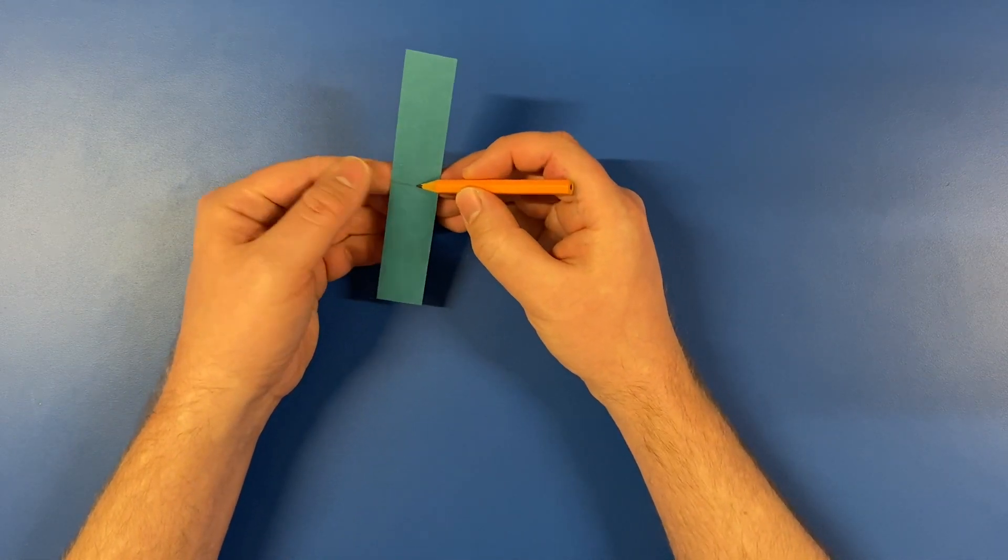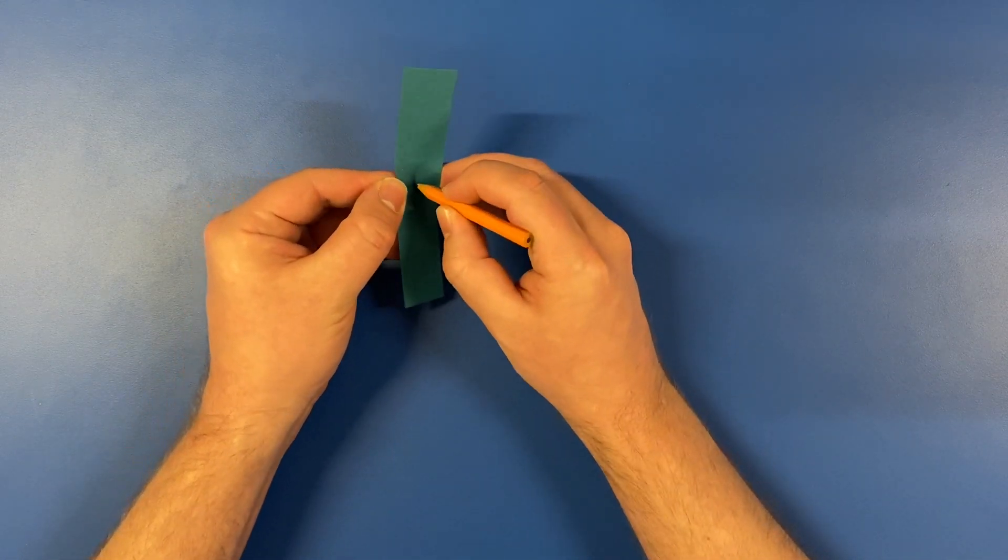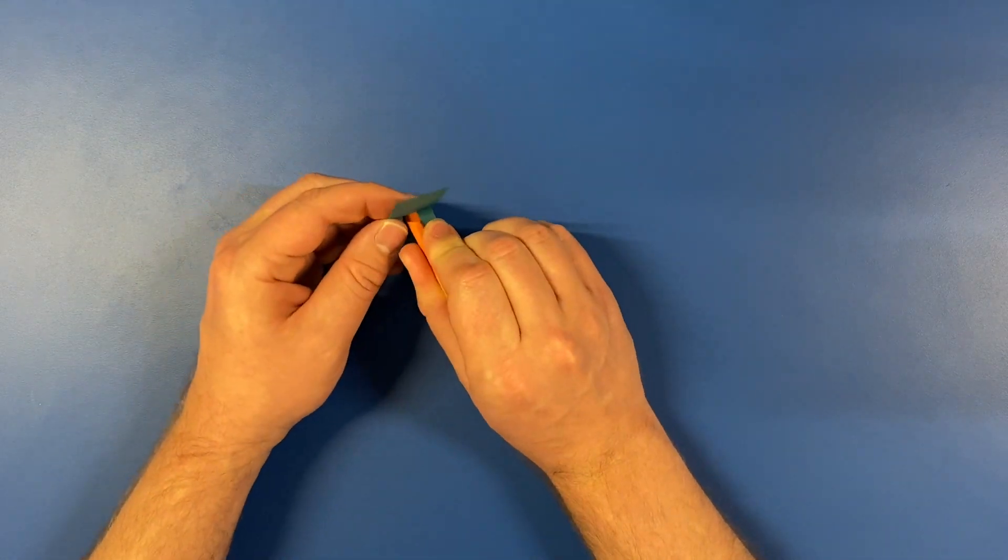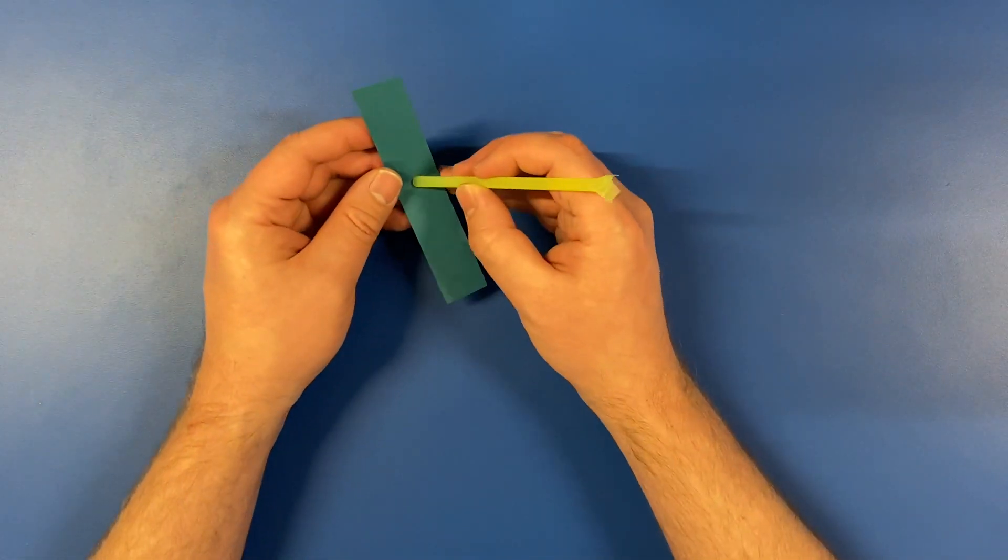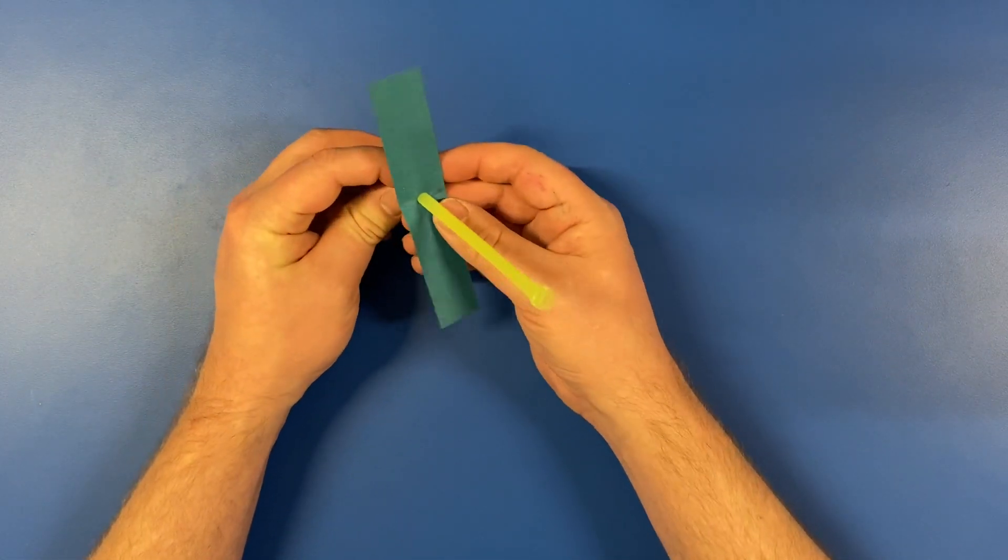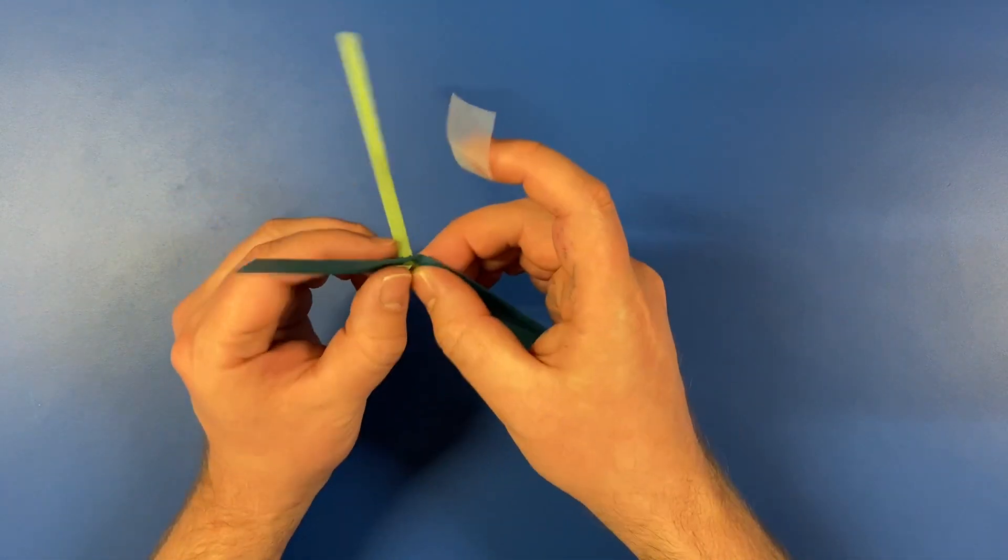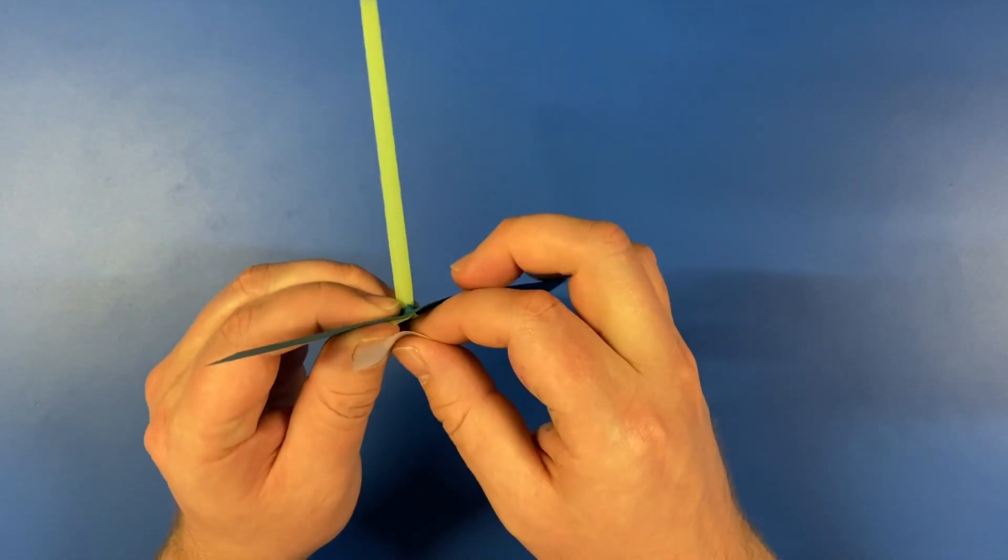I don't have a hole punch handy, so I will just use a sharpened pencil to poke my hole. Make sure it's the same size and width of your straw. Slide your straw through the hole. Open the flaps you cut earlier and tape them to the paper like this.